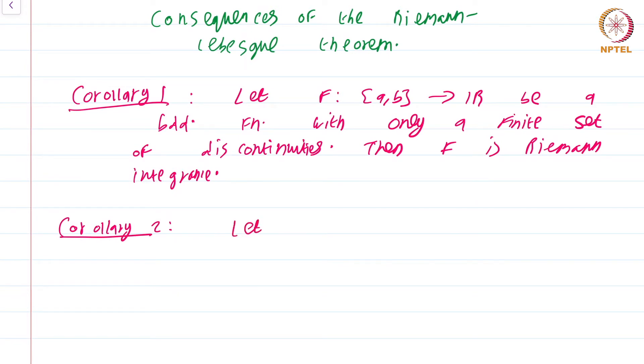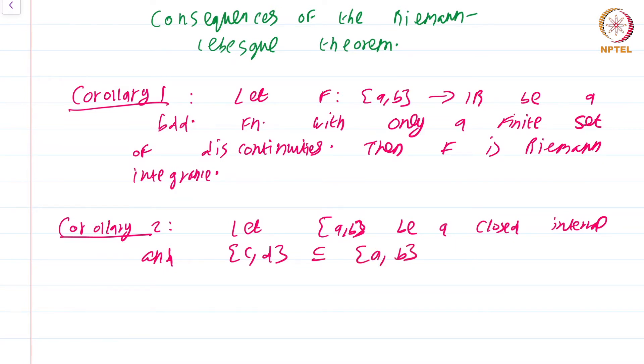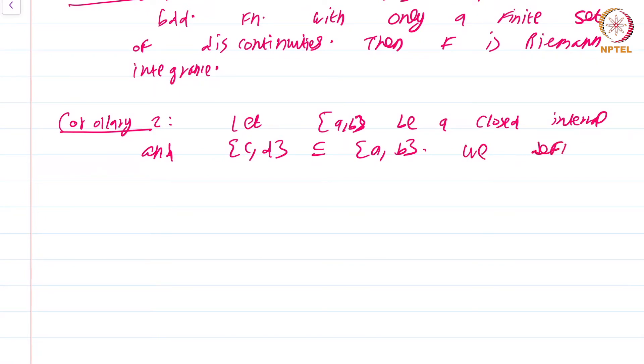Let [a,b] be a closed interval and [c,d] be a subset of [a,b]. Now we define chi_[c,d], this is called the indicator or characteristic function of [c,d]. This can be defined more generally for any subset, but I am just defining it for closed intervals for the time being.